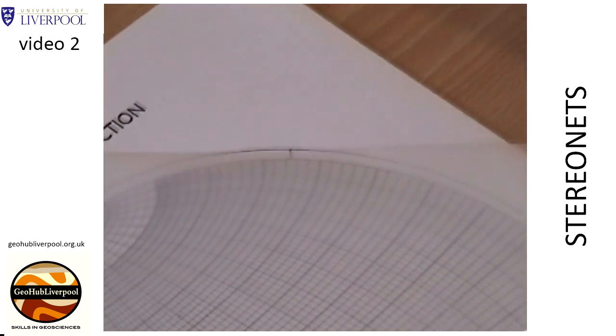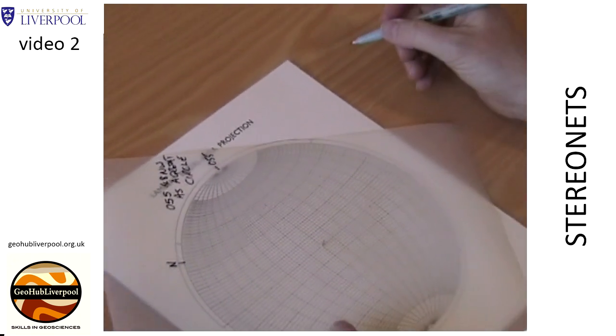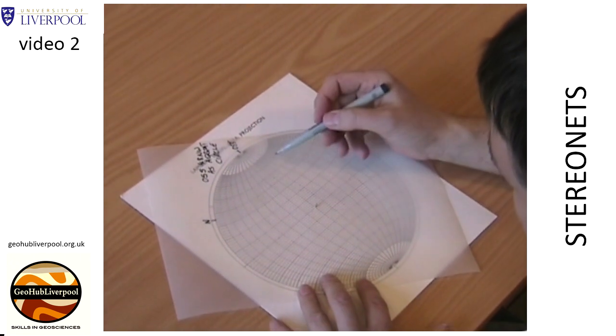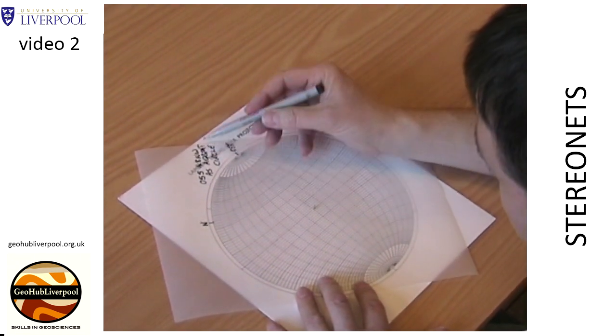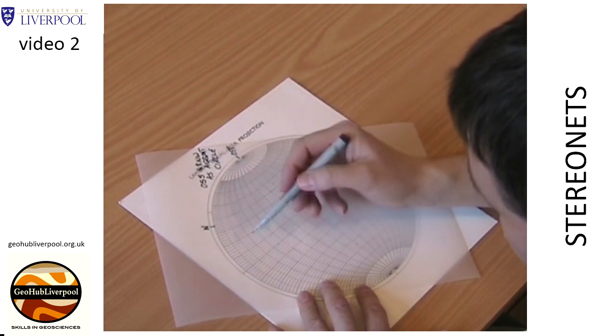The plane dips at 48 degrees towards the northwest, so find the correct section of the equator and count 48 degrees along the equator from the primitive circle towards the center of the stereonet.